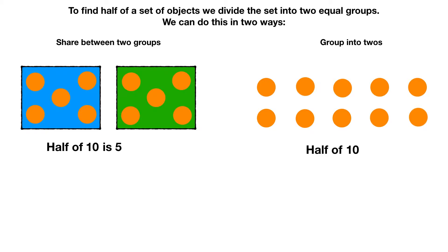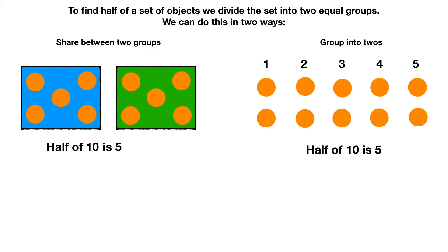Now we count how many groups of two we have: one, two, three, four, five. We have five groups of two, so half of ten is five.